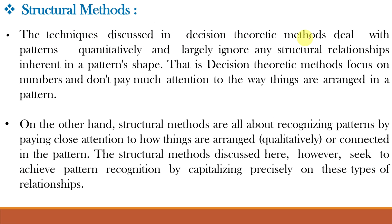The techniques discussed in decision theoretic methods deal with patterns quantitatively and largely ignore any structural relationships inherent in pattern shape. That is, decision theoretic methods focus on numbers and don't pay much attention to the ways things are arranged in a pattern. Whereas structural methods are all about recognizing patterns by paying close attention to how things are arranged qualitatively or connected in the pattern.